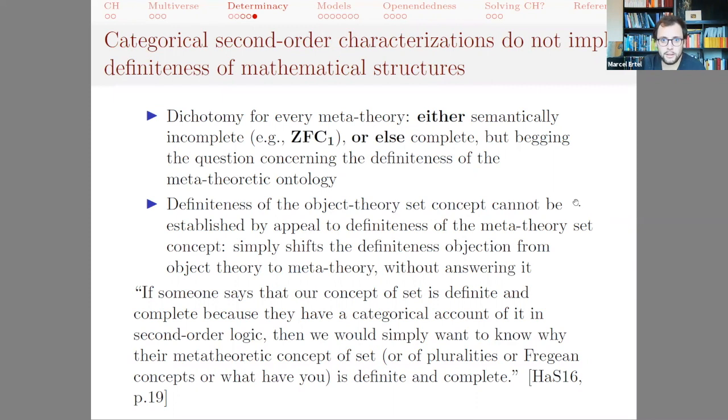The point of the criticism is essentially the following: we have for every meta-theory the dichotomy that either the meta-theory is itself semantically incomplete, so the interpretation that we give for the second order quantifiers is in terms of ZFC set theory in first order in the meta-theory, or else it is complete but in that case we're just begging the question. The definitiveness of the object theory's set concept can't be established by appealing to the definitiveness of the meta-theory set concept, which is shifting the objection from the object theory to the meta-theory without ever answering it. If someone says that our concept of set is definite and complete because they have a categorical account of it in second order logic, then we would simply want to know why the meta-theoretic concept of set is definite and complete, so it doesn't really solve anything.